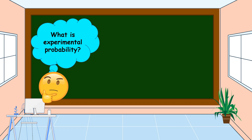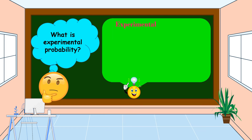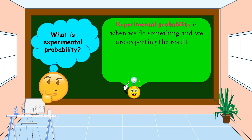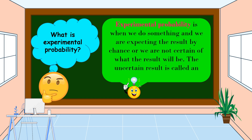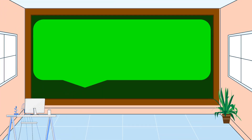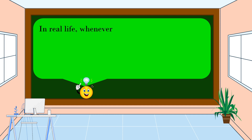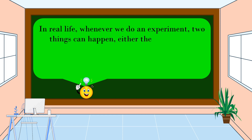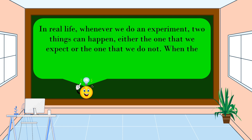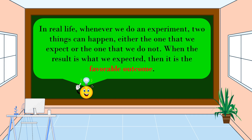What is experimental probability? Experimental probability is when we do something and we are expecting the result by chance, or we are not certain of what the result will be. The uncertain result is called an outcome. In real life, whenever we do an experiment, two things can happen: the one that we expect, or the one that we do not. When the result is what we expected, then it is the favorable outcome.